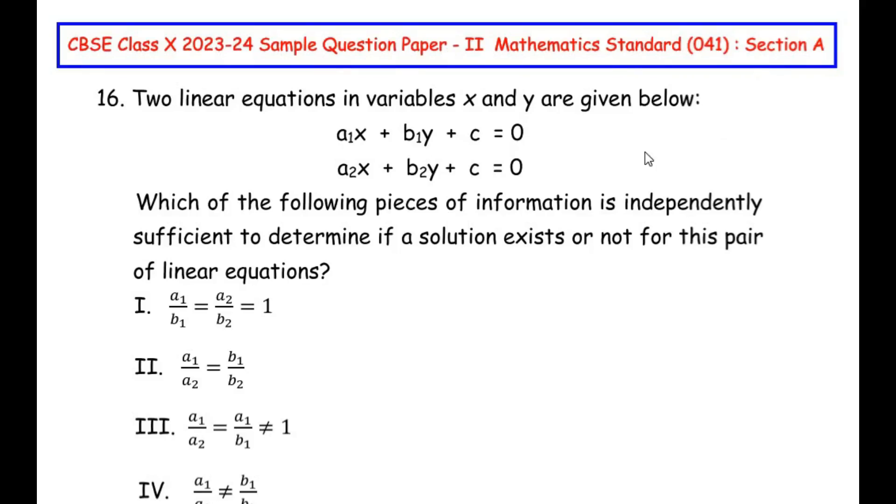Section A, which is multiple choice questions where each question is of one mark. This question is from Pair of Linear Equations in Two Variables chapter. Two linear equations in variables x and y are given below. Which of the following pieces of information is independently sufficient to determine if a solution exists or not for this pair of linear equations?